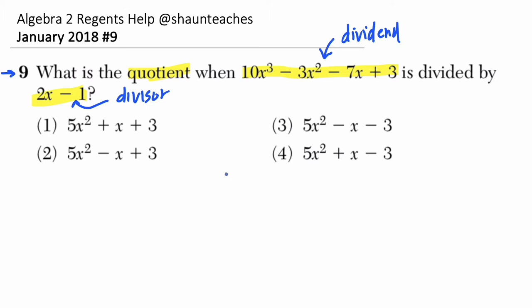Okay, so how do we do that? We want to do our long division to figure this out. So we've got 10x³ - 3x² - 7x + 3, and we want to divide by 2x - 1.